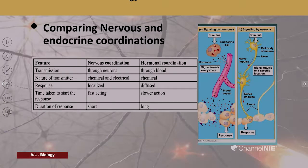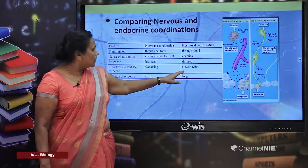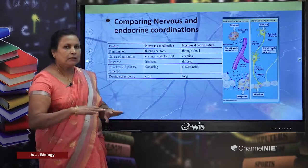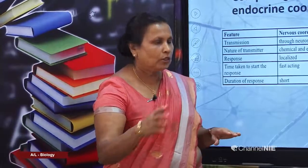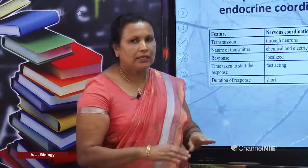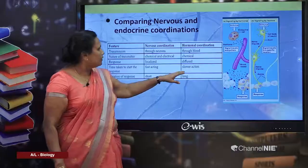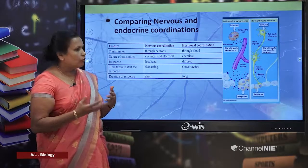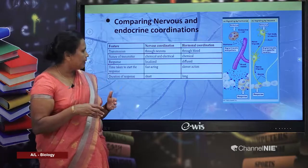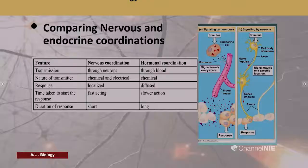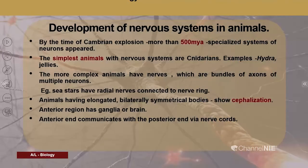In hormonal coordination the response is diffuse — it happens throughout the body. Regarding time taken to start the response: nervous coordination is very fast, for example removing your hand from a hot object. Hormonal responses take quite a long time because hormones diffuse throughout the body and act as long as hormones remain in the blood. The duration of the nervous response is short, and hormonal response is long.